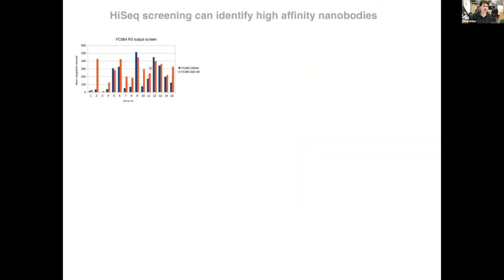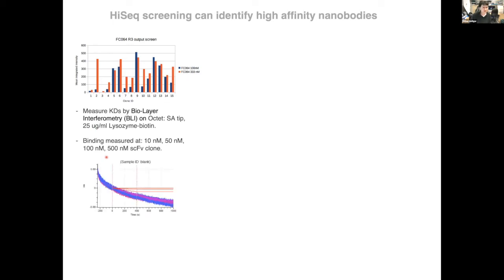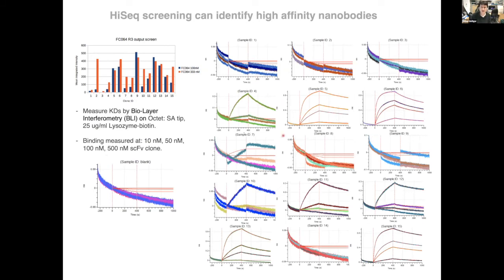To test if really high signal on the flow cell really correlates with binding, we picked a number of clones, both high signal and low signal clones and cloned and expressed them and tested them on the Octet by biolayer interferometry for binding to lysozyme. This is the blank Octet surface and you can see the different clones measured here. You can see some of these show very, very nice binding to lysozyme. And I think encouragingly the results are really generally consistent with the HiSeq screening data in the sense that high signal clones give you high affinity binding when expressed outside. And in this case, we've been able to identify low nanomolar binders directly from this screen after three rounds of selection, even though the library itself if you simply pick random clones is not sufficiently enriched to give you any high affinity binders.